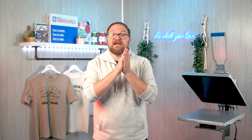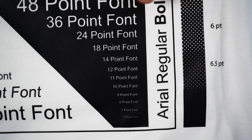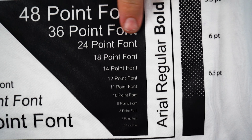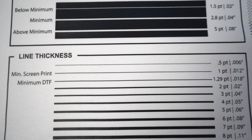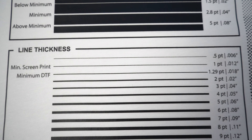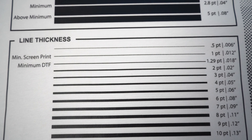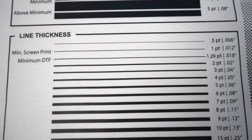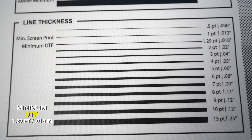Now this also allows us to get much better definition in small characters — for example, in our knocked out text. However, our minimum line weight is actually slightly larger than what can be achieved with screen printing. So instead of one point, our minimum with DTF transfers is 1.29 points.